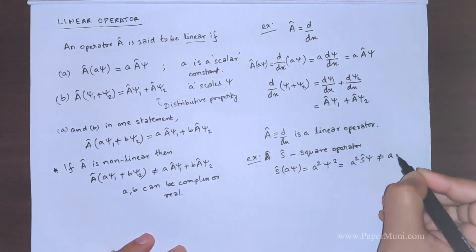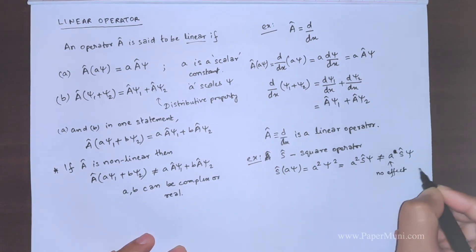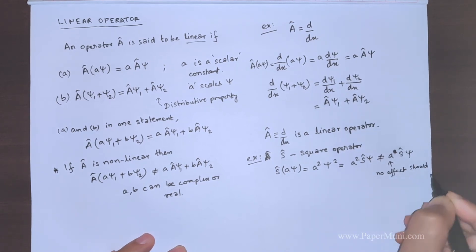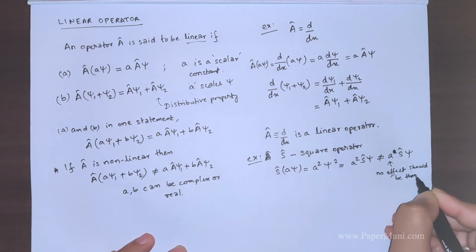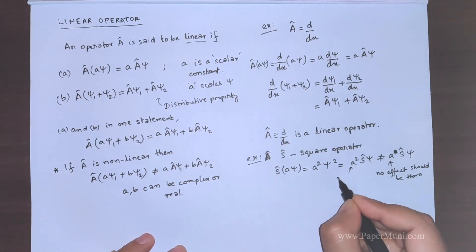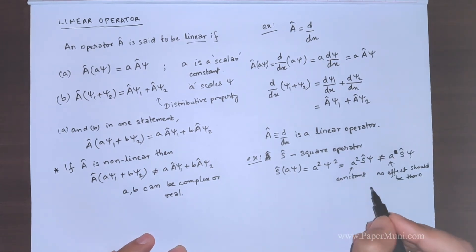But now, we needed that it shouldn't affect the scalar constant. No effect on scalar constant should be there for it to be a linear operator. But if it is a non-linear operator, it might affect. I am not saying it is there, it should be there for it to be a linear operator. But in this case, what is happening is this quantity is getting squared. This is affected. The constant is affected.